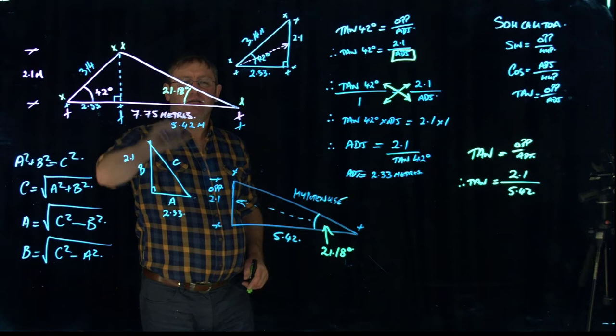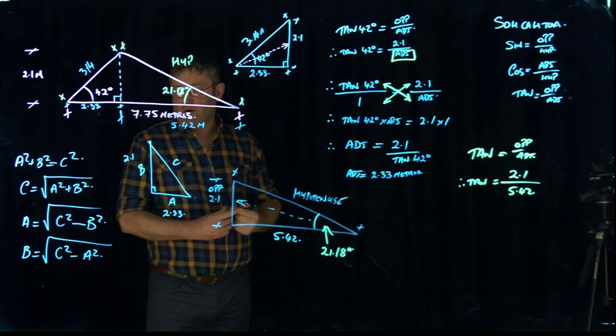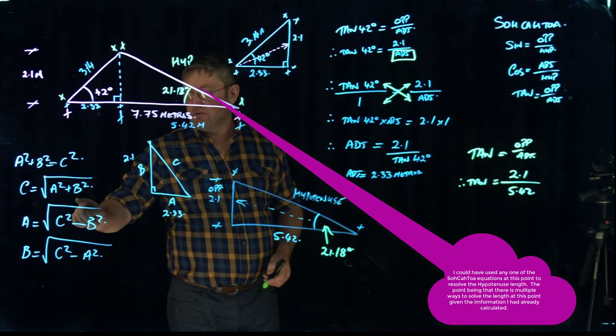And the last thing on that right angle triangle there, we want to know what effectively is actually the hypotenuse length across the space here. So we go back to Pythagoras' theorem again. We've got our two short lengths. We've got our 5.42. We've got our 2.1. So we're using, because it's the two short lengths, we add them together.